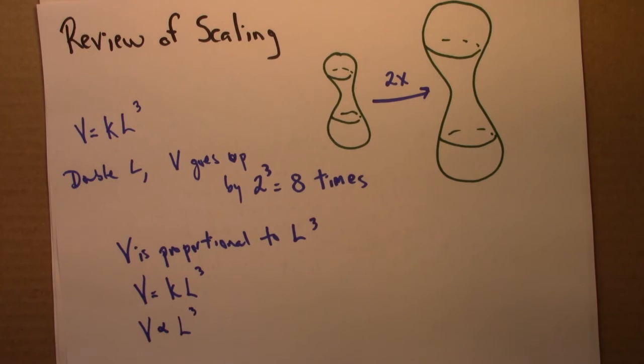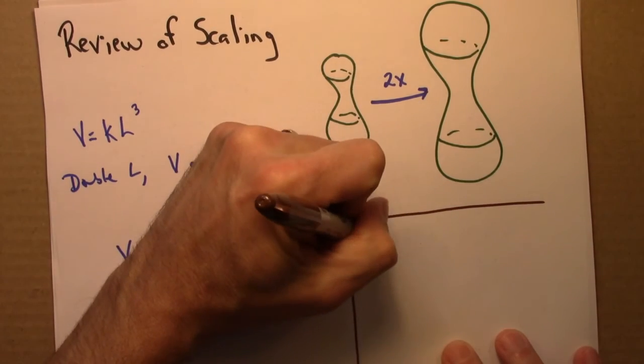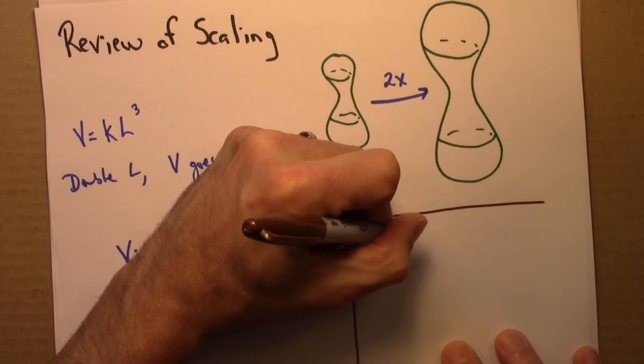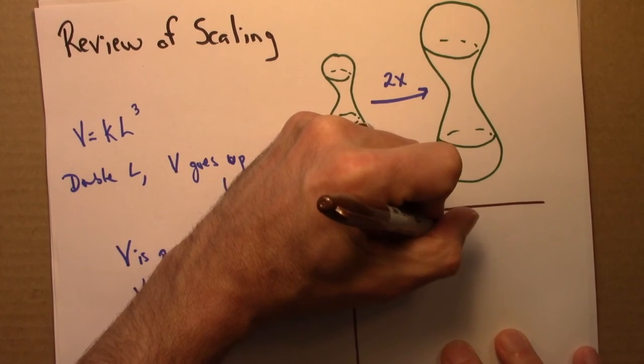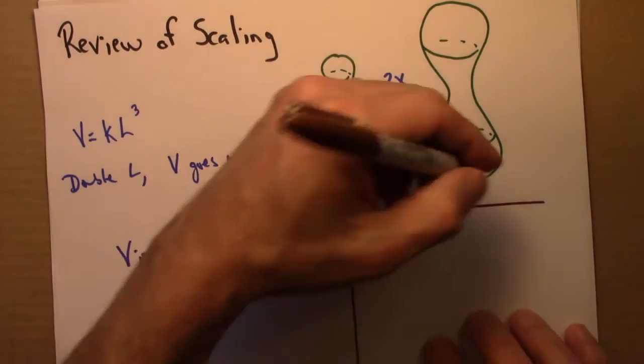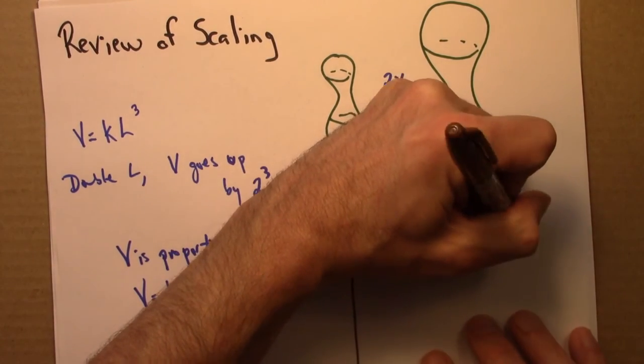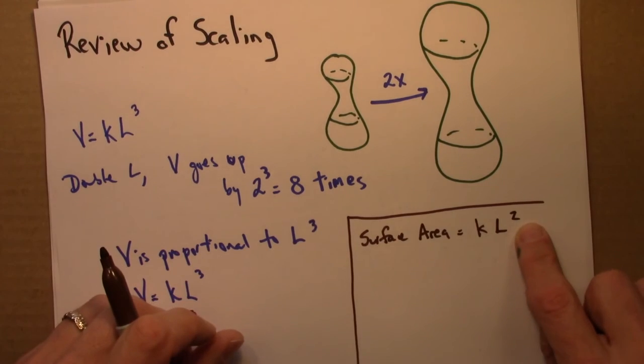Let's think about some other properties. Suppose I was interested in the surface area. Well, it's an area, so we know that it's two-dimensional. So that's going to be proportional to L squared. It's two-dimensional.